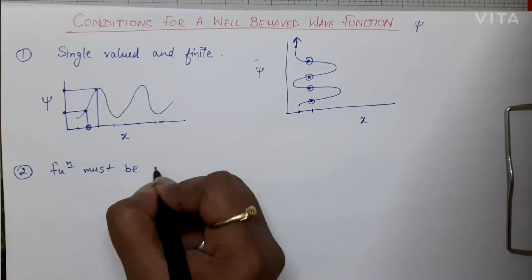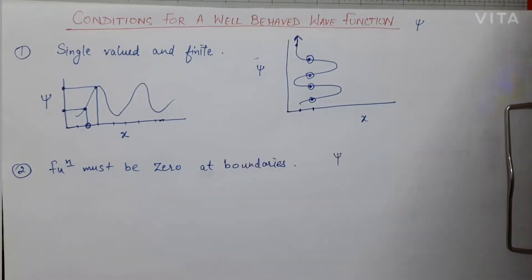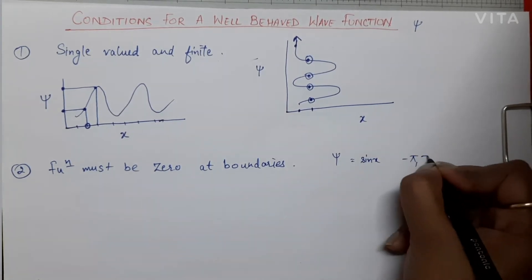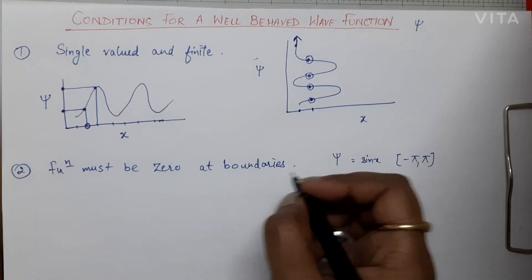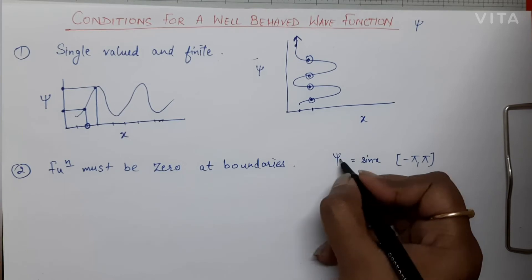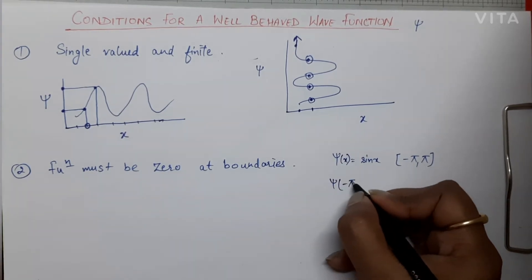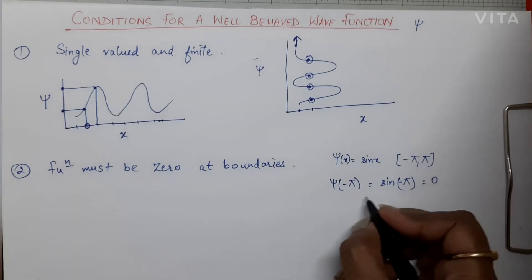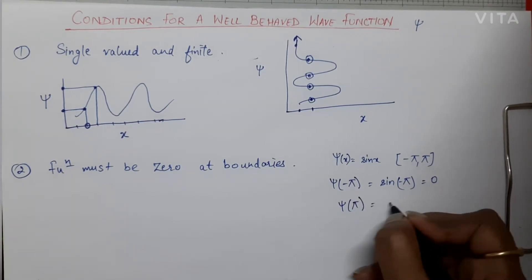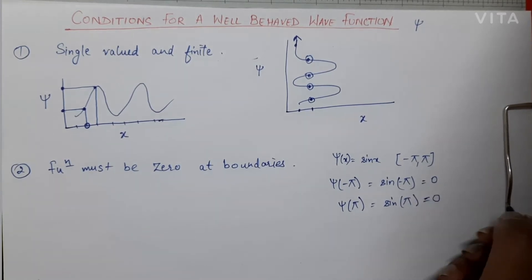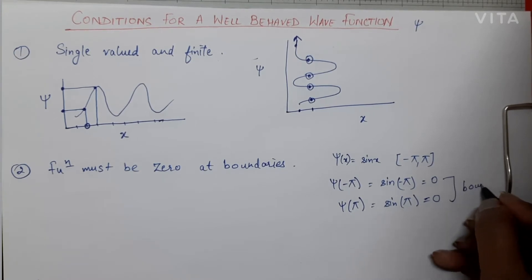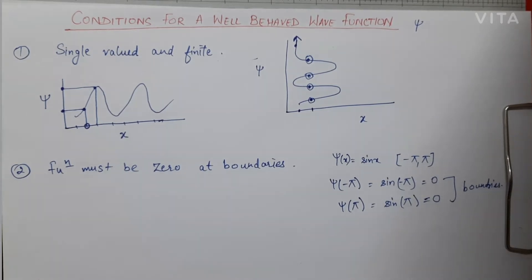The second condition is that the function must be zero at the boundaries. For example, if the wave function is psi = sin(x) and the boundaries are from -π to +π, we check: sin(-π) = 0 and sin(+π) = sin(180°) = 0. The function becomes zero at both boundaries, so this condition is satisfied and the function is acceptable.